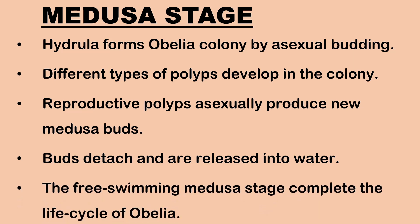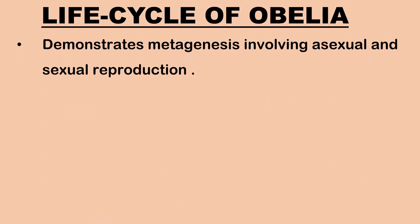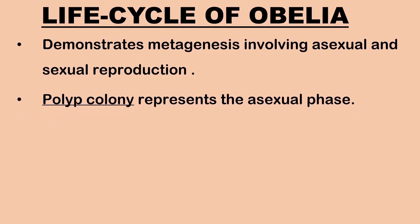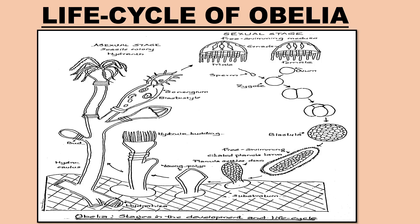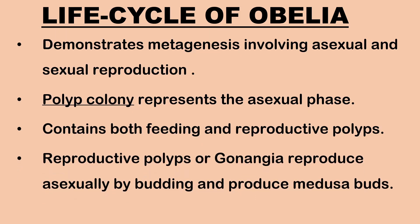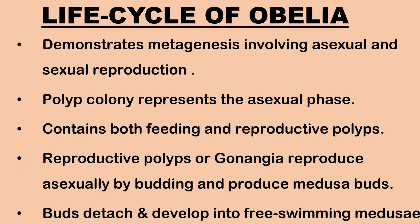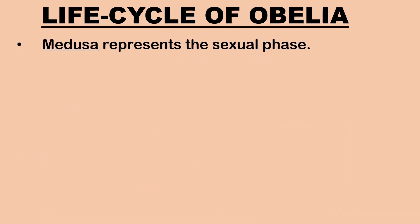The free-swimming medusa stage completes the life cycle of Obelia. The life cycle is characterized by both asexual and sexual modes of reproduction. The polyp colony represents the asexual phase and contains both feeding and reproductive polyps. The reproductive polyps reproduce asexually by budding and produce medusa buds, which on maturation get detached from the colony and develop into free-swimming medusa.